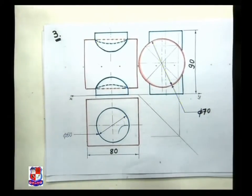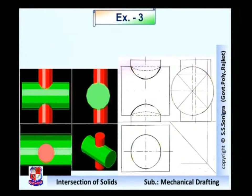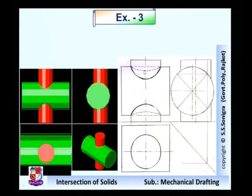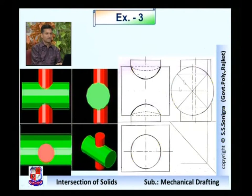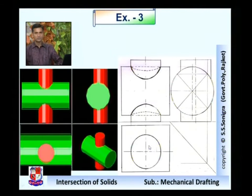I hope the solution is clear to you. This is the analogy of the drawings which we have made. This is the front view drawn over here, and this is the curvature shape that we have drawn. This dotted line is the curvature shape on the back side. This is the side view, and this is the top view drawn over here. So I hope the solution of problem number 3 is clear to you.